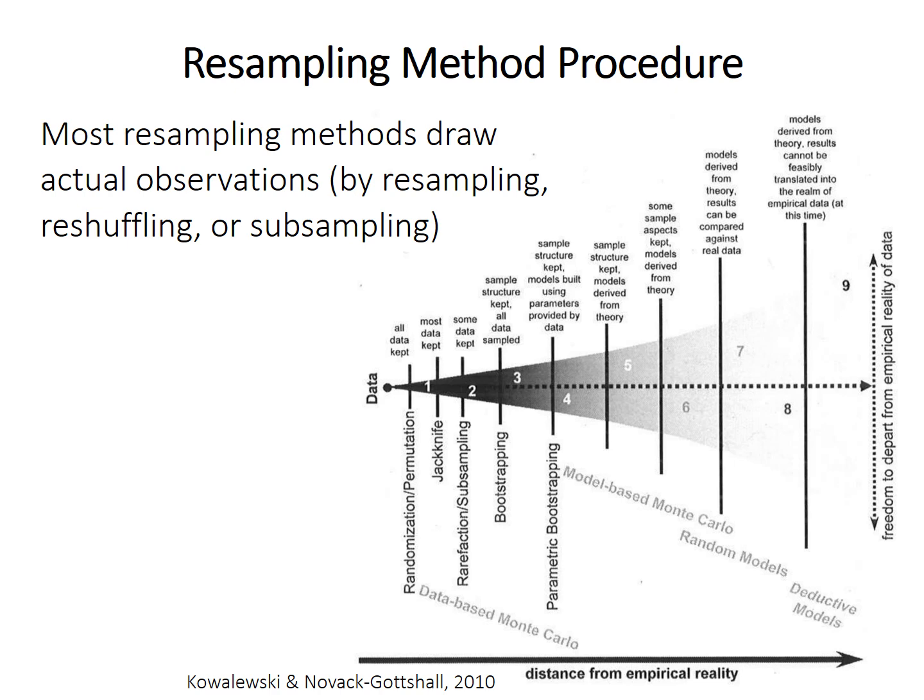The framework here arranges them by distance from the empirical reality of the original data. So we'll cover randomization, which just reshuffles the original data, but it keeps all the values, it uses them all at once.